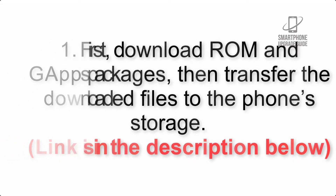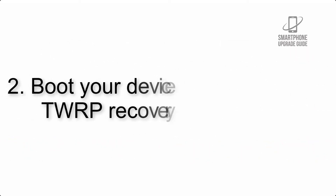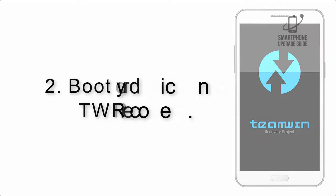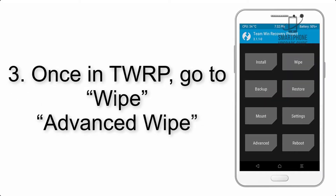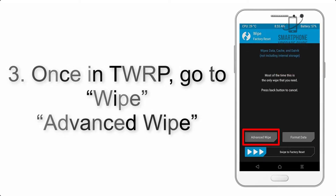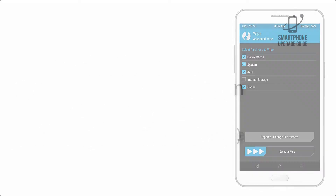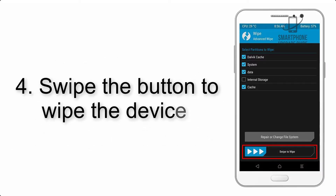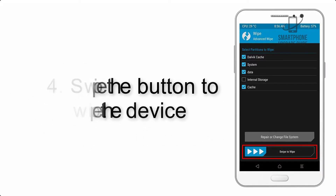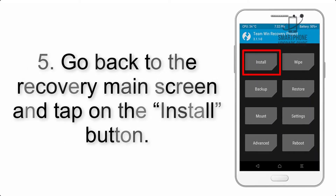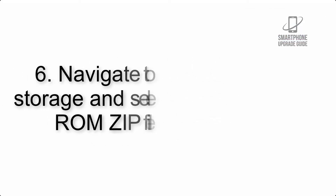Step 3: Boot your device into TWRP recovery. Once in TWRP, click on Wipe, then Advanced Wipe, and select the checkboxes as shown in the image, excluding internal storage. Step 4: Swipe the button to wipe the device.